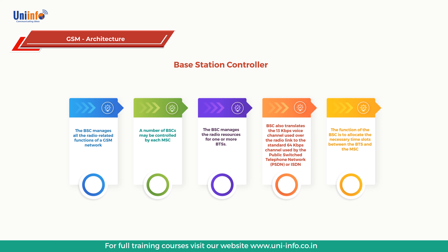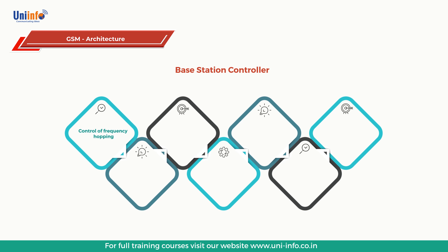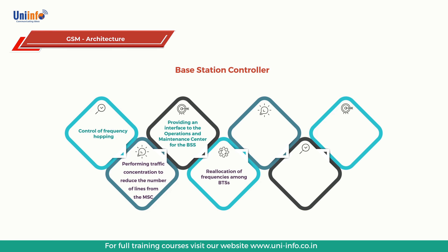The BSC assigns and releases frequency and time slots for the MS, and handles inter-cell handovers. It controls the power transmission of the BSS and MS in its area. The function of the BSC is to allocate the necessary time slots between the BTS and MSC. It is a switching device that handles the radio resources. Additional functions include: 1) control of frequency hopping; 2) performing traffic concentration to reduce the number of lines from the MSC; 3) providing an interface to operations and maintenance for the BSS; 4) reallocation of frequencies among BTS; 5) time and frequency synchronization; 6) power management; 7) time delay measurement of received signals from the MS.